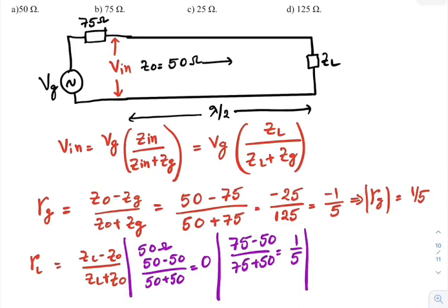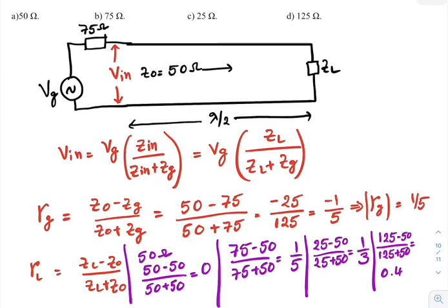If ZL is equal to 25, then 25 minus 50 by 25 plus 50, that is equal to 1 by 3. And the fourth option is, if ZL is equal to 125, 125 minus 50 by 125 plus 50, that is equal to 0.428.